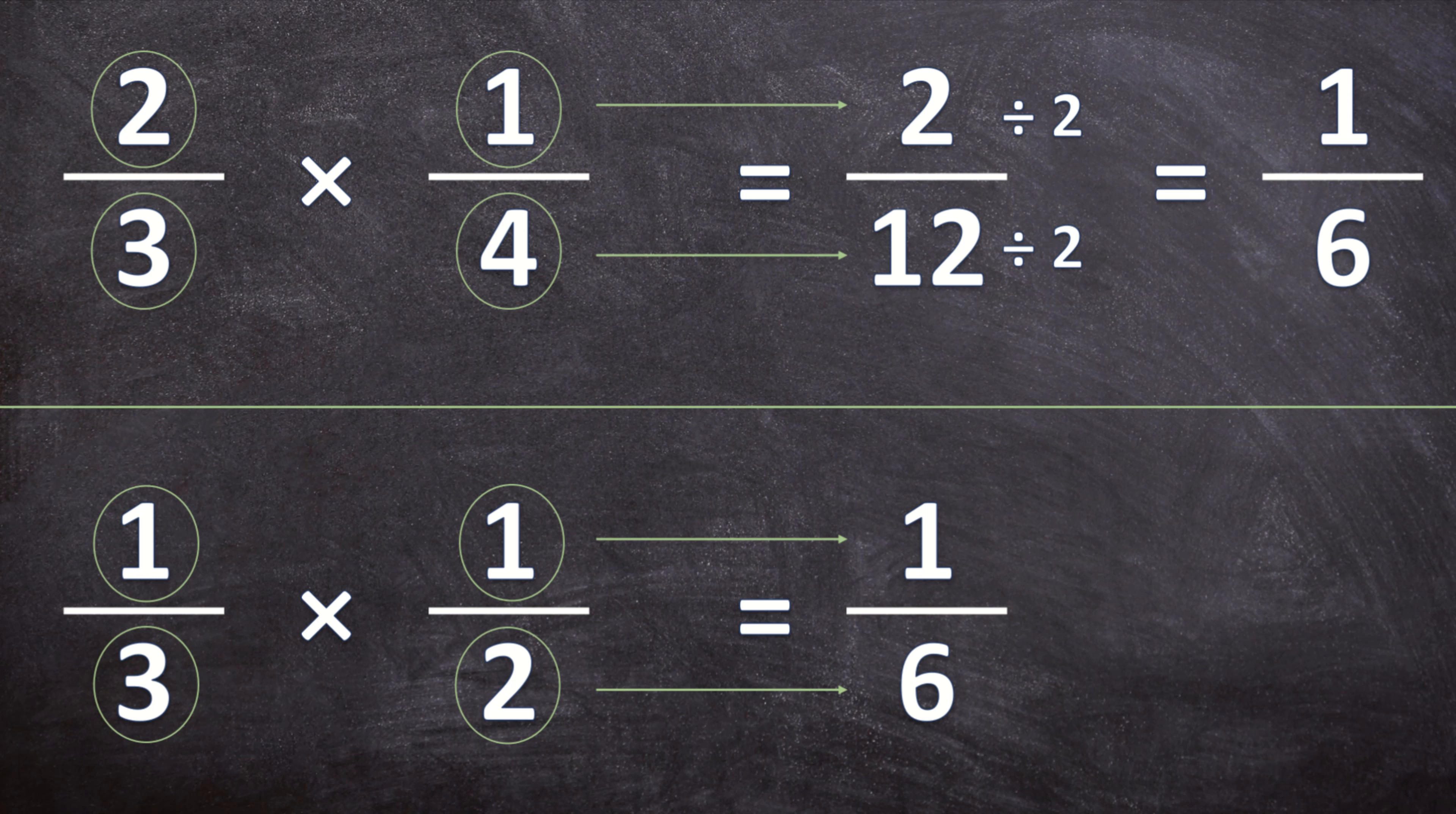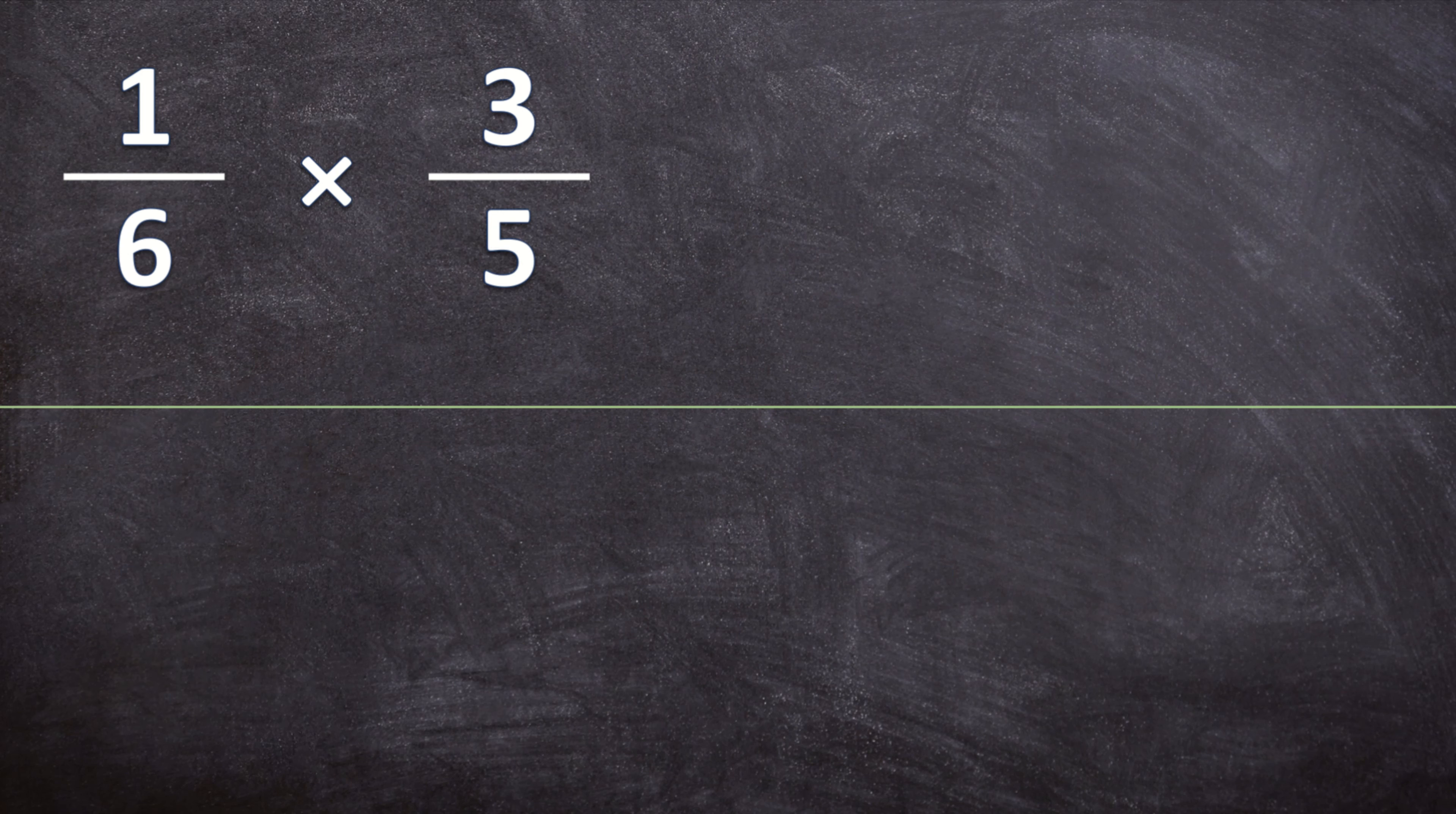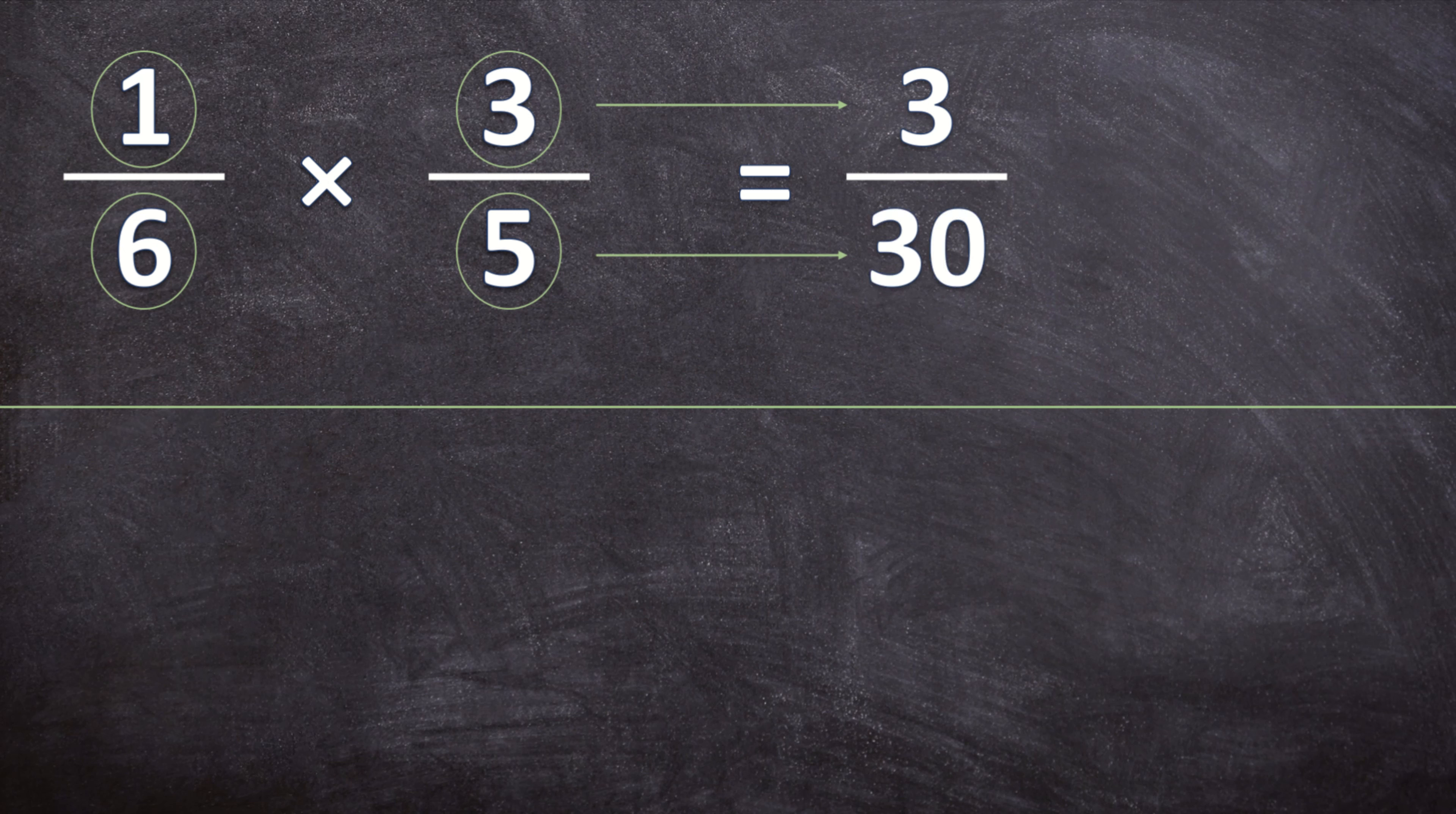Now let's look at one more example. So let's start with our first method to get our answer. We multiply the numerators. 1 times 3 is 3 over 6 times 5 is 30.